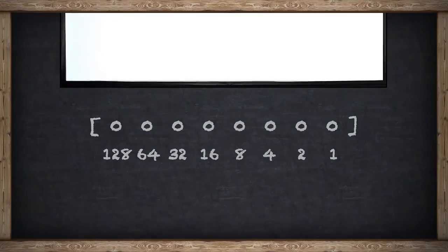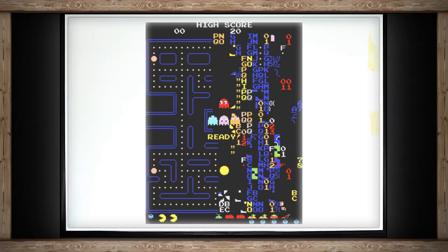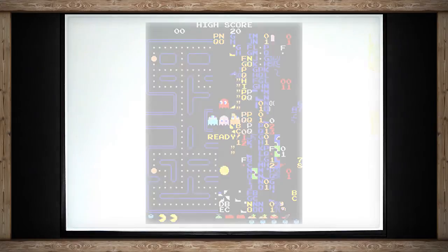Take for instance Pac-Man. After level 255, Pac-Man gets kind of glitchy because the computer can't count past 255. Nowadays, most computers are 64-bit, which means we can count to a ridiculously high number. But for the purposes of understanding color, you really only need to know 8 bits.